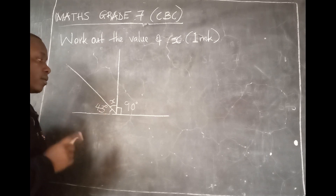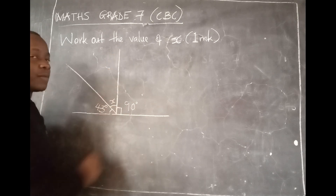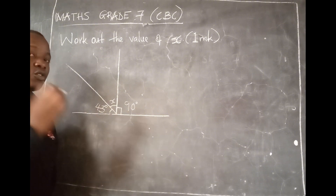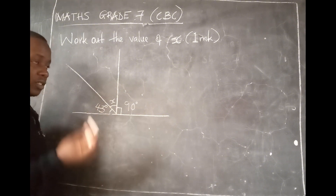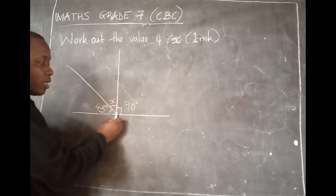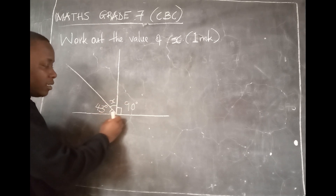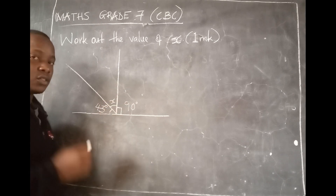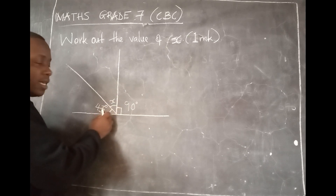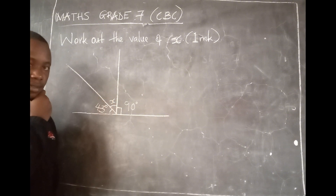Now, because this is 90 degrees and this is a perpendicular bisector, we have two ways of doing this. You could say, because this is a perpendicular bisector, it has bisected 180 into two times 90 and 90. Then say 90 minus 43, and you'll find x.